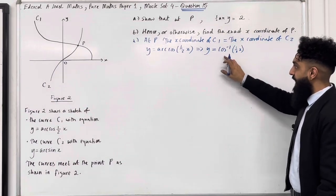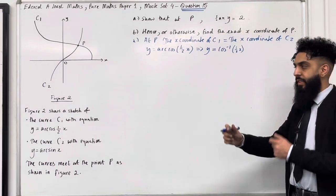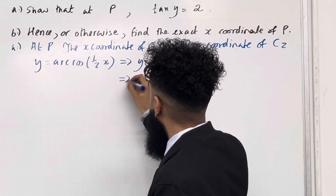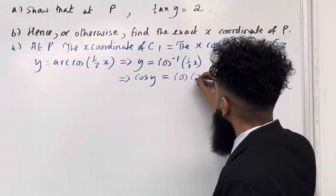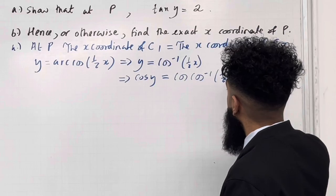Now, to get rid of the cos inverse, I must apply cos on both sides. So this implies that cos y = cos(cos⁻¹(½x)).